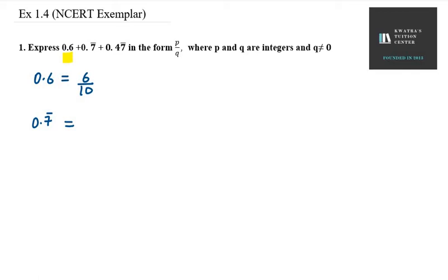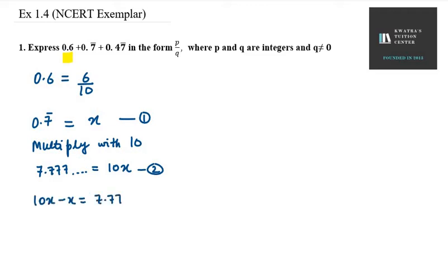Let's do another one, that is 0.7 bar. Let x = 0.777... Multiply both sides with 10: 7.777... = 10x. Now we have to subtract. I will take this equation as 1, and subtract equation 2 from 1. So you get 10x - x = 7.777... - 0.777..., which gives 9x = 7, so x = 7/9.